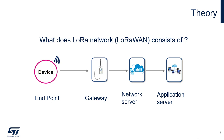Then we have the gateway, and the sufficient function of the gateway is to be a pipe — a bit pipe, that's all. There is no brain behind the gateway. All the intelligence of the network is hidden behind the network server. The network server decides which gateway will be selected to send data to the end node, and in the uplink direction, it decides from which gateway to take the message from the node.